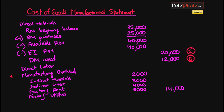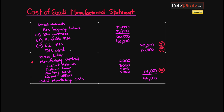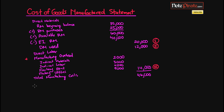Those three components — direct materials used, direct labor, and manufacturing overhead — are known as total manufacturing costs, which adds up to $46,000. Next we account for the work in process changes. We add the work in process beginning inventory of $17,000 and subtract the work in process ending inventory of $14,000, giving a change of $3,000 that will be added to the manufacturing costs.